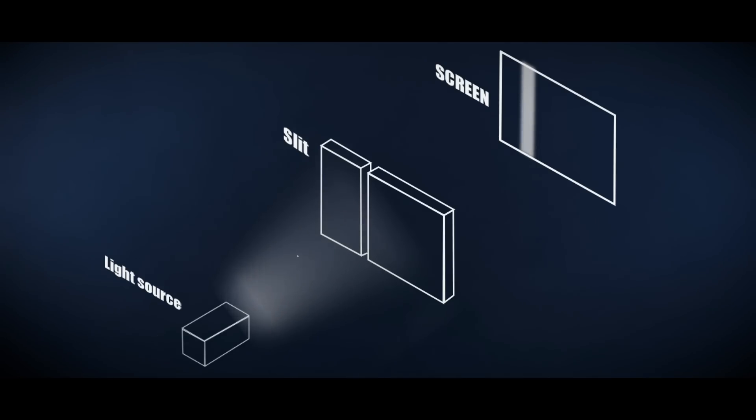Then we gradually reduce the intensity of the light source. When the output is reduced to a certain point, what appears on the screen is not a continuous shaft of light, but a collection of individual dots.